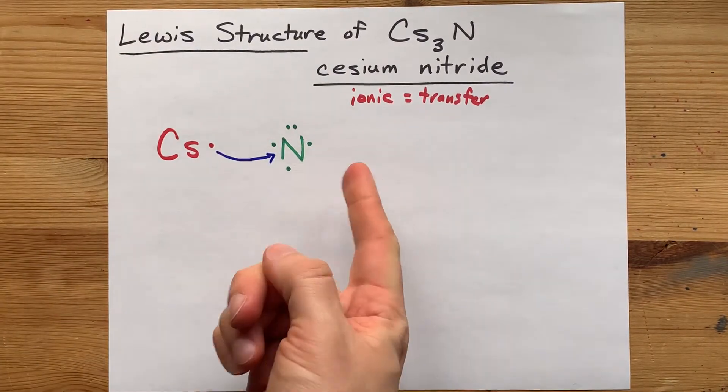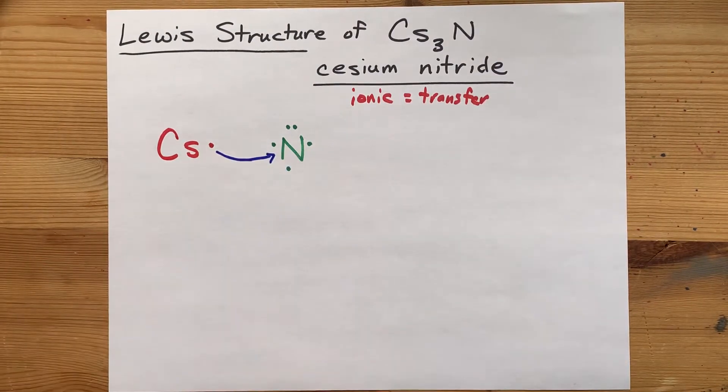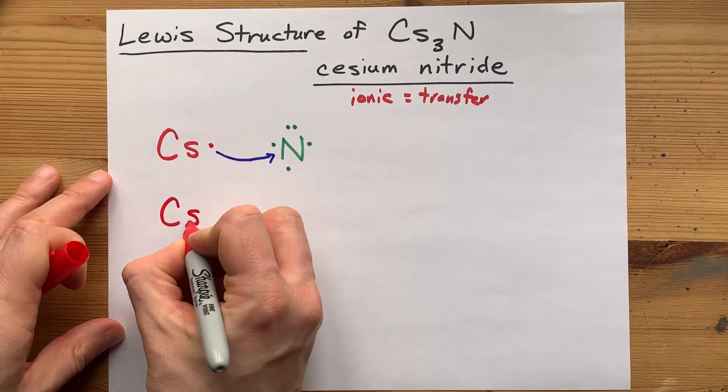And now nitrogen has six, which is closer, but it's not a full eight. Where is it going to get more? The answer is more cesium atoms.